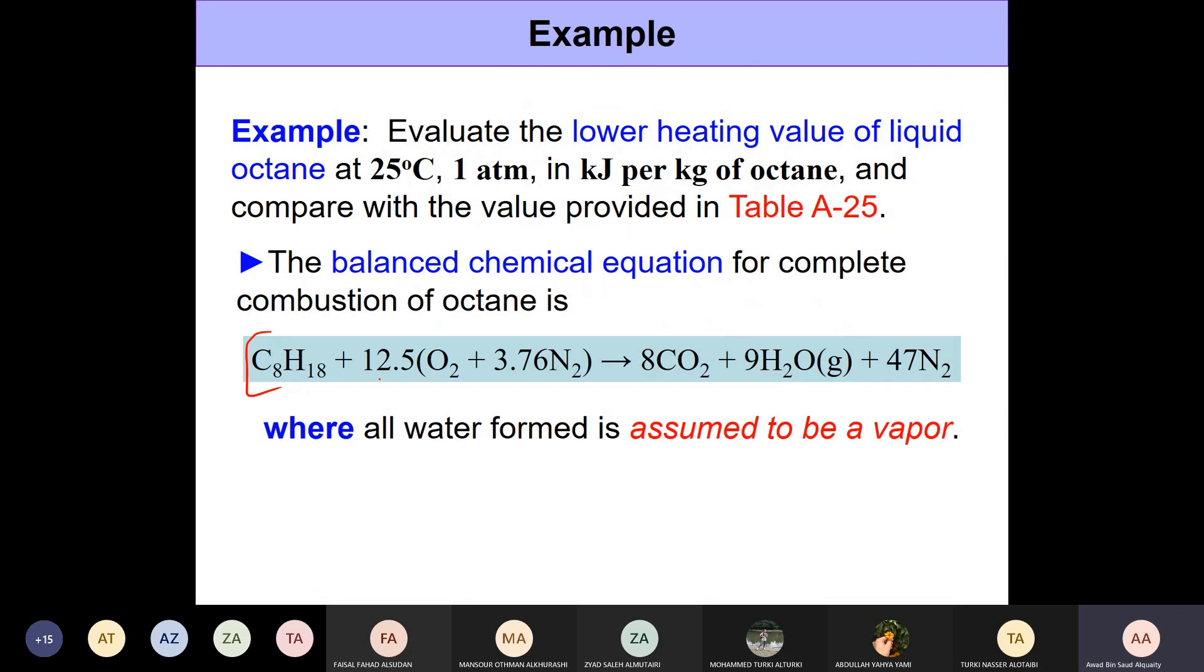One mole of fuel requires 12.5 moles of oxygen and gives eight moles of CO2, nine moles of water, and some quantity of nitrogen. Key point: we're looking at lower heating value so the water should be in the vapor phase. Now all we need is to make use of this equation and write the lower heating value - enthalpy of reactants minus enthalpy of products.